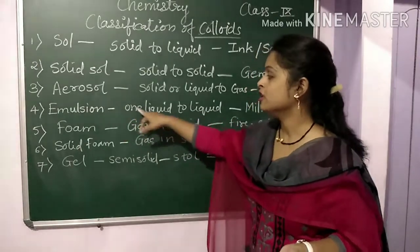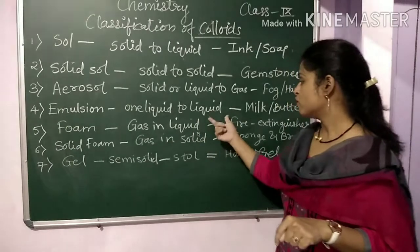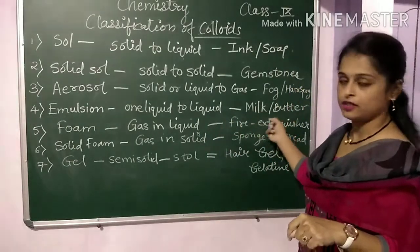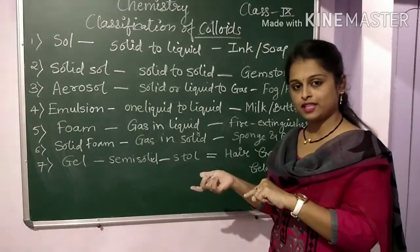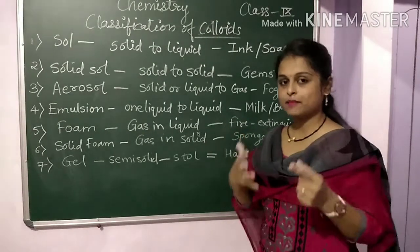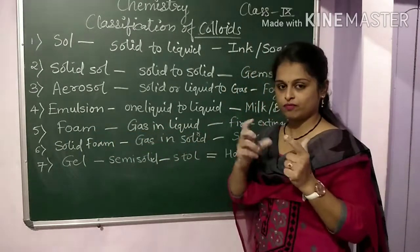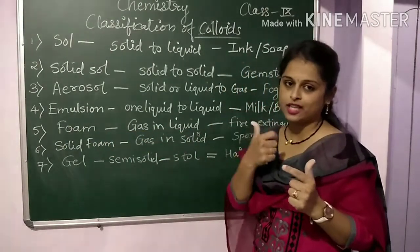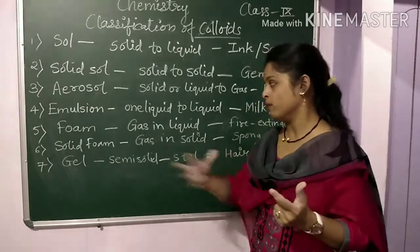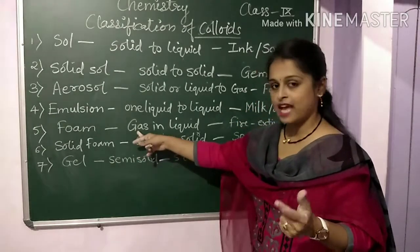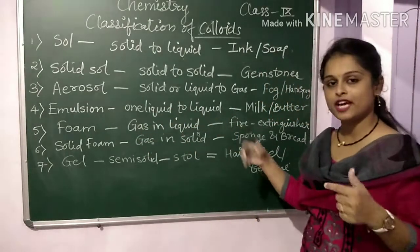Emulsion is when one liquid mixes with another liquid — examples are milk and butter. When you mix milk into water, they mix together, forming an emulsion. Foam is another type — shaving cream is a common example. When gas mixes with a liquid, they form foam. One best example is a fire extinguisher.